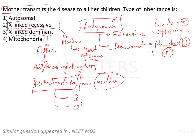So the type of inheritance here is mitochondrial, since the other types have different scenarios we have already discussed. The answer to this question is the fourth option — mitochondrial inheritance — which transmits mitochondrial genetic material from the mother, affecting all offspring whether male or female.